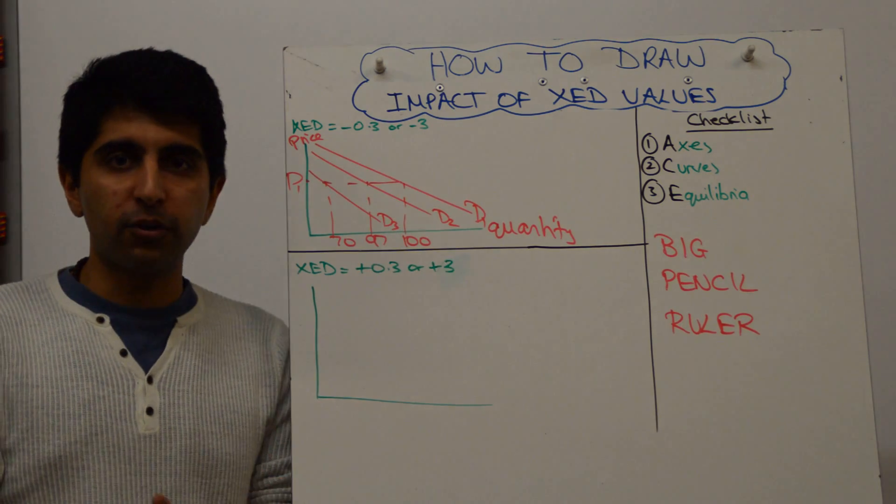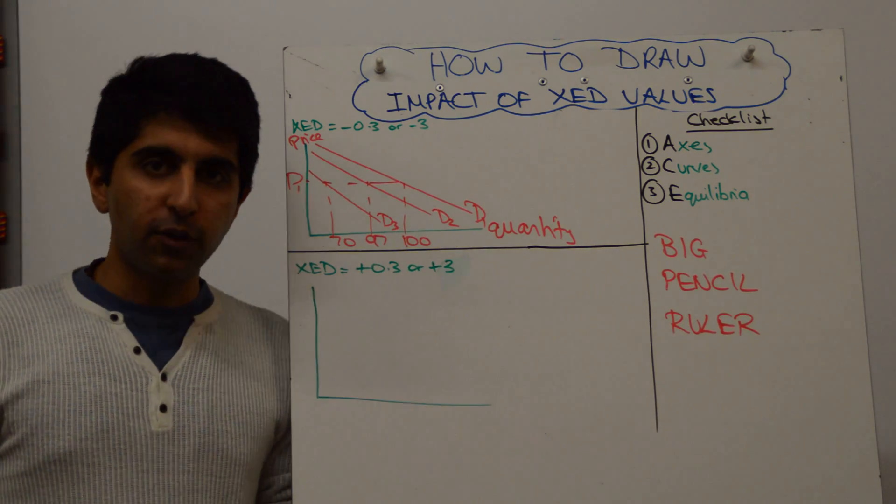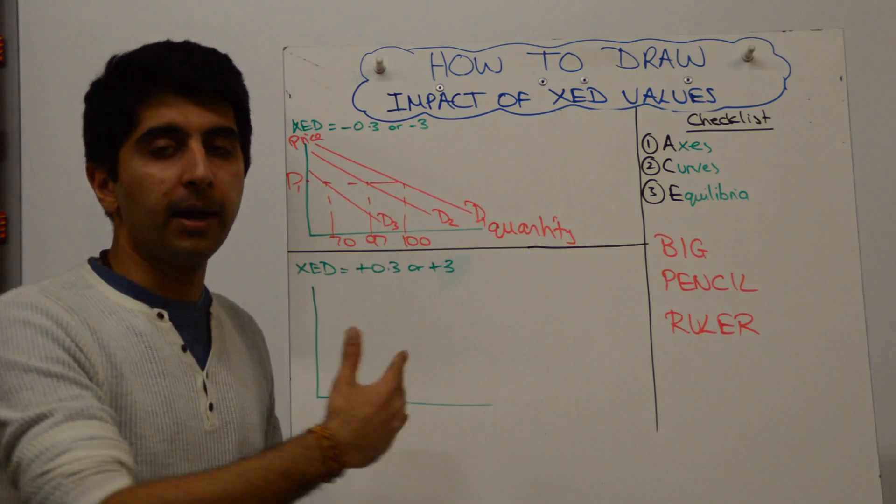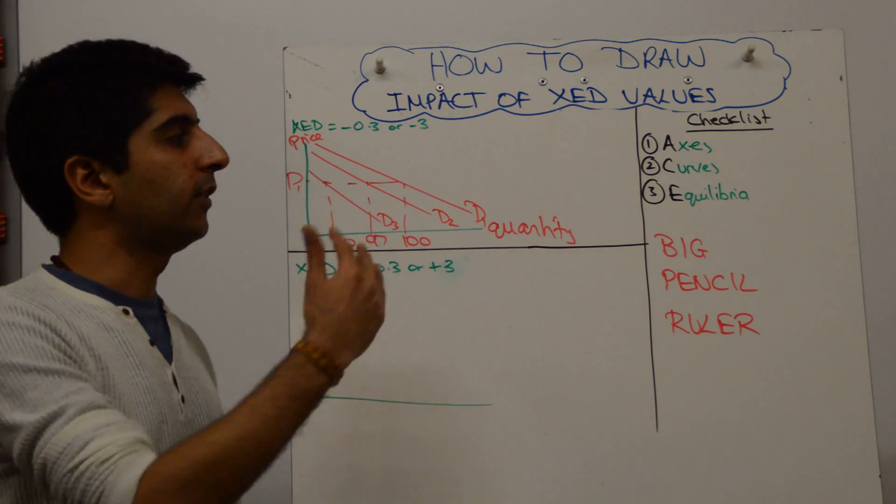So this is if the price of Nespresso machines went up. If the price of Nespresso machines went down, then instead of demand shifting left, demand was shift to the right. And again, the greater the XED value, the greater the shift.